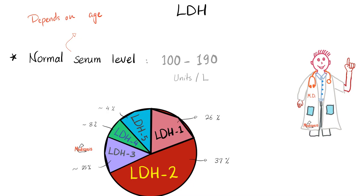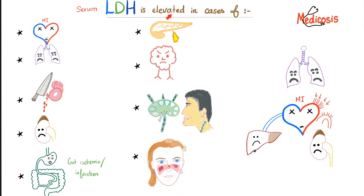Normal total serum LDH for adults is between 100 and 190 IU/L. LDH1 comprises about 26% of total LDH — so roughly 25 IU/L normally. Serum LDH is elevated in myocardial infarction, lung disease, hemolysis, kidney disease, gut ischemia, gut infarction, acute pancreatitis, tumors including lymphoma, lupus, and multi-organ failure.